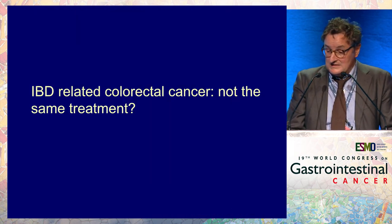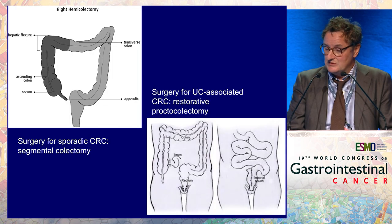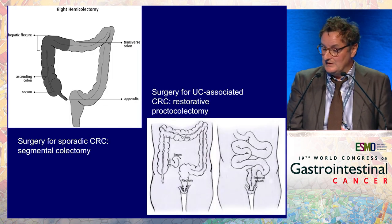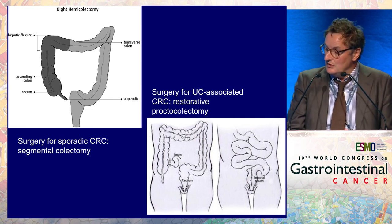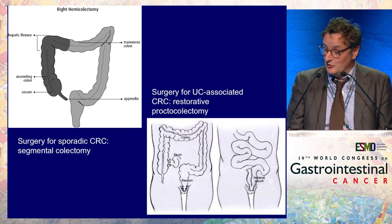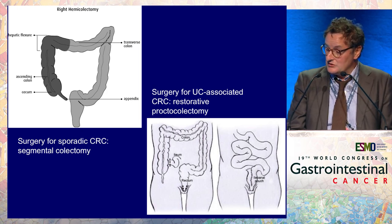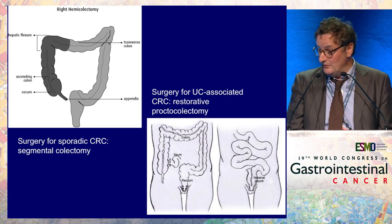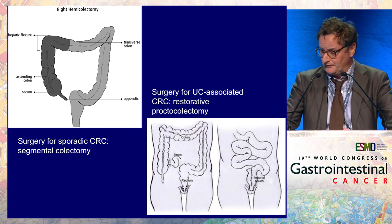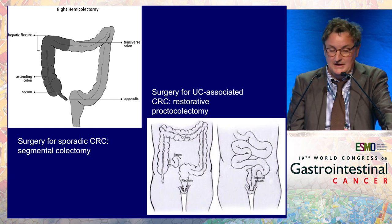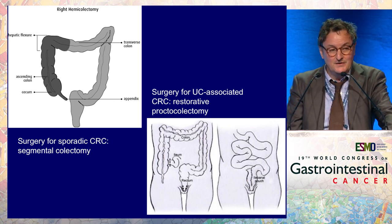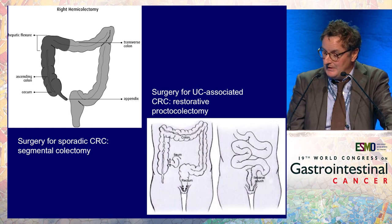Is it the same treatment? It is not the same surgical treatment. For sporadic colorectal cancer, you perform a segmental colectomy. For UC-associated colorectal cancer, the appropriate operation is restorative proctocolectomy — resection of the whole colon and rectum, sometimes with mesorectal excision and construction of an ileo-anal pouch, which is a very difficult surgery with possibility of fistula that may impact the start of postoperative chemotherapy if indicated.